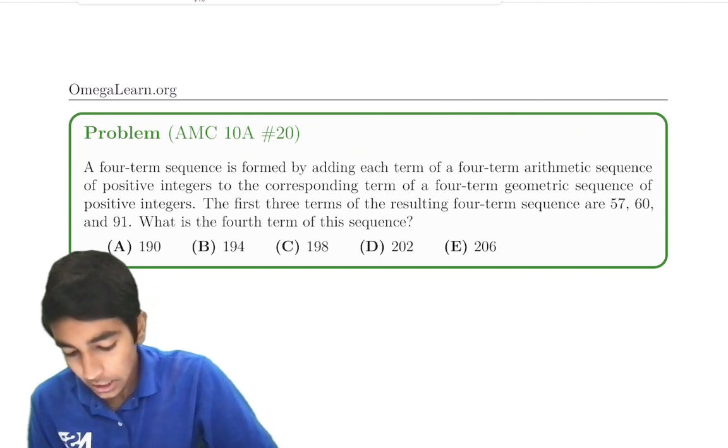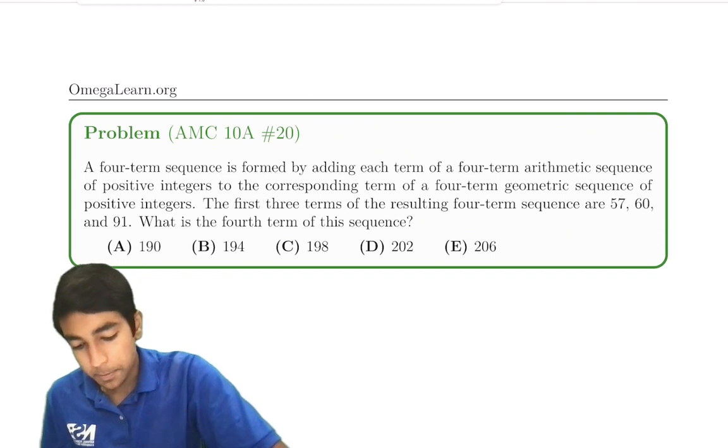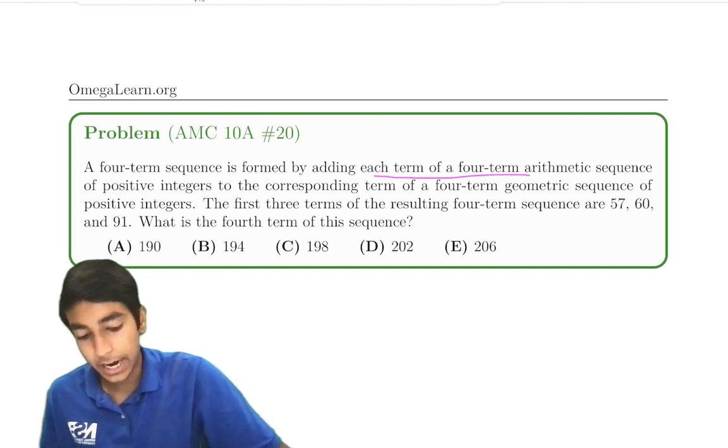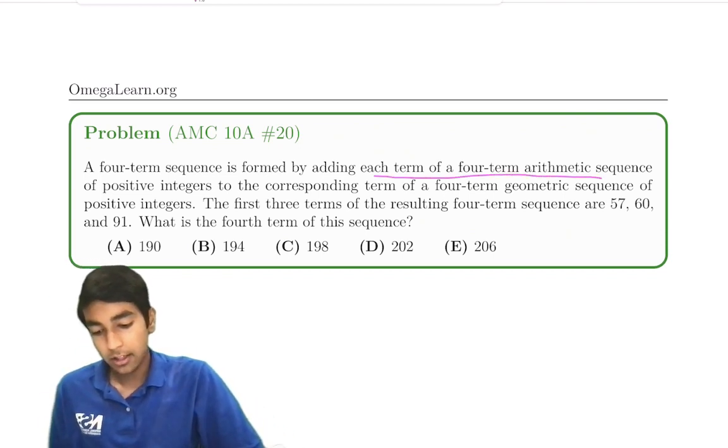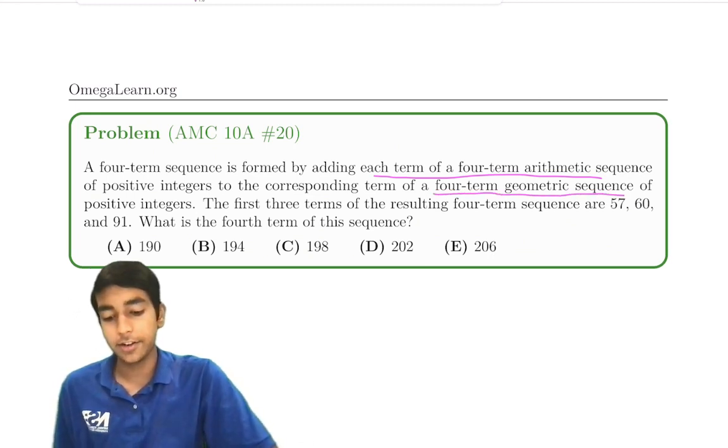A four-term sequence is formed by adding each term of a four-term arithmetic sequence of positive integers to the corresponding term of a four-term geometric sequence of positive integers.